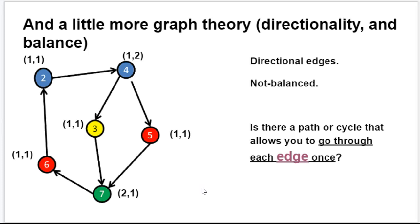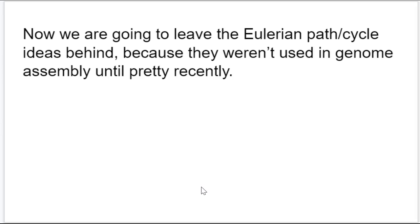And it relates, trust me, it relates to genome assembly. So now what we're going to do is we're going to leave the idea of an Eulerian path or cycle. That is the idea that you could have a path or a cycle through a graph where you crossed each edge only once and you crossed all of them. That's what an Eulerian path or a cycle is, invented by Leonard Euler back in the 1700s. We're going to leave that idea there for now, and we're going to go on to another idea in mathematics.